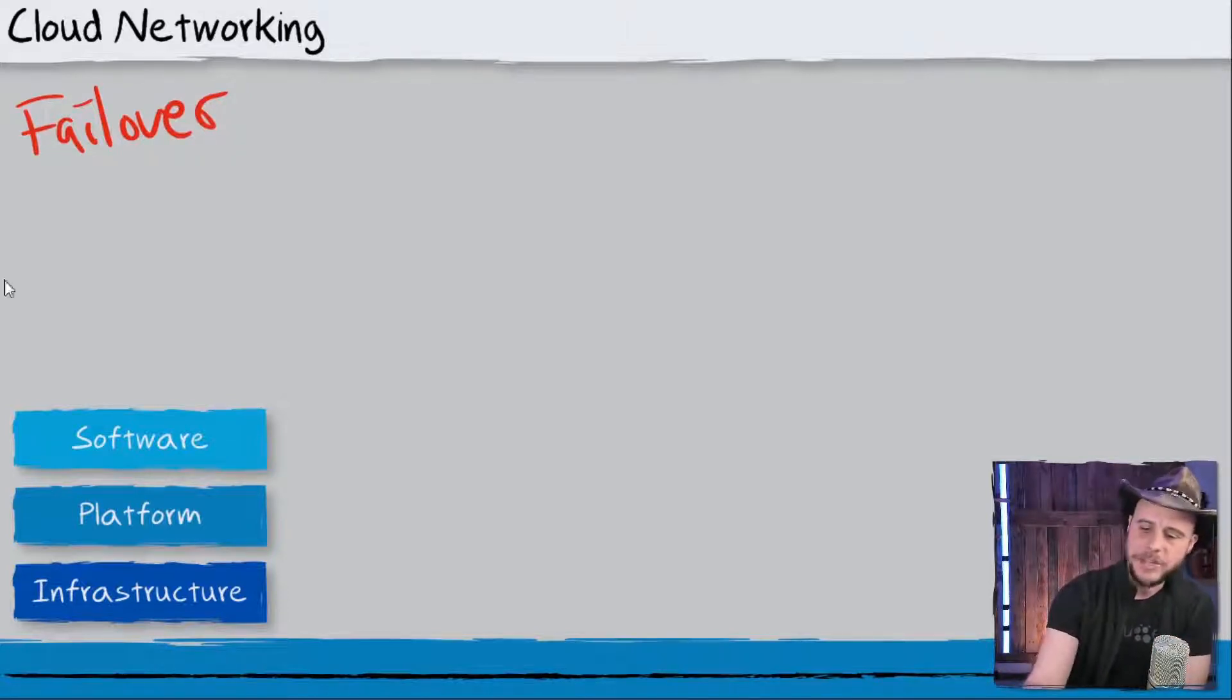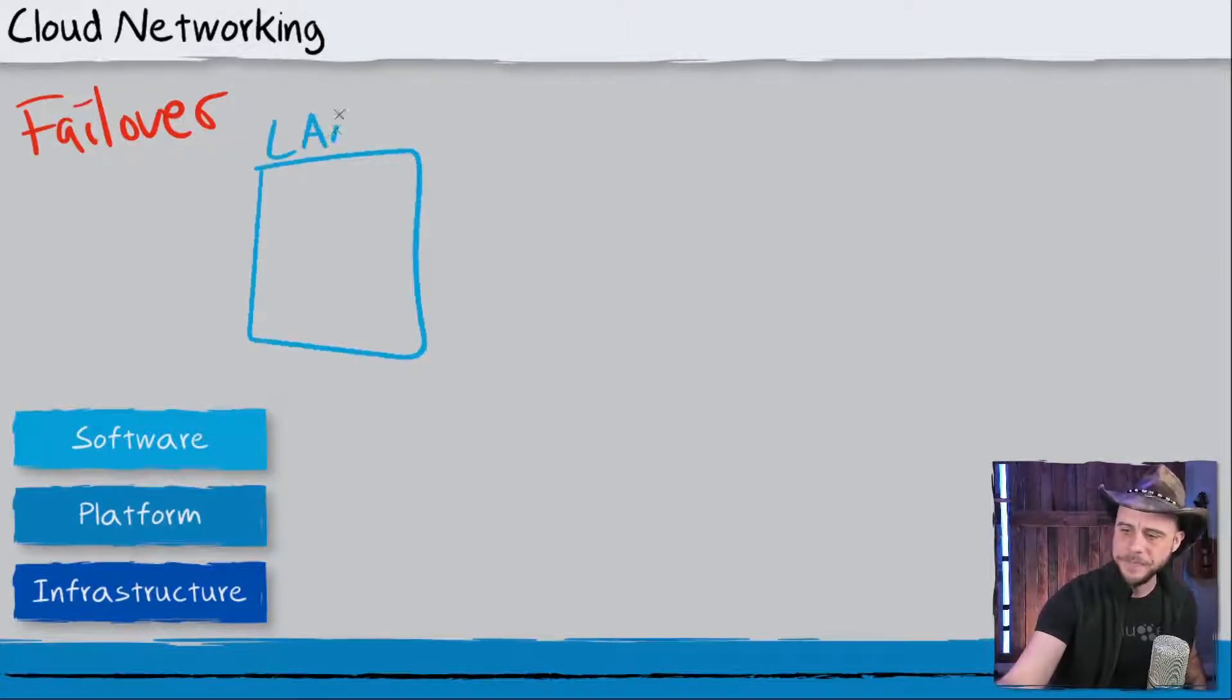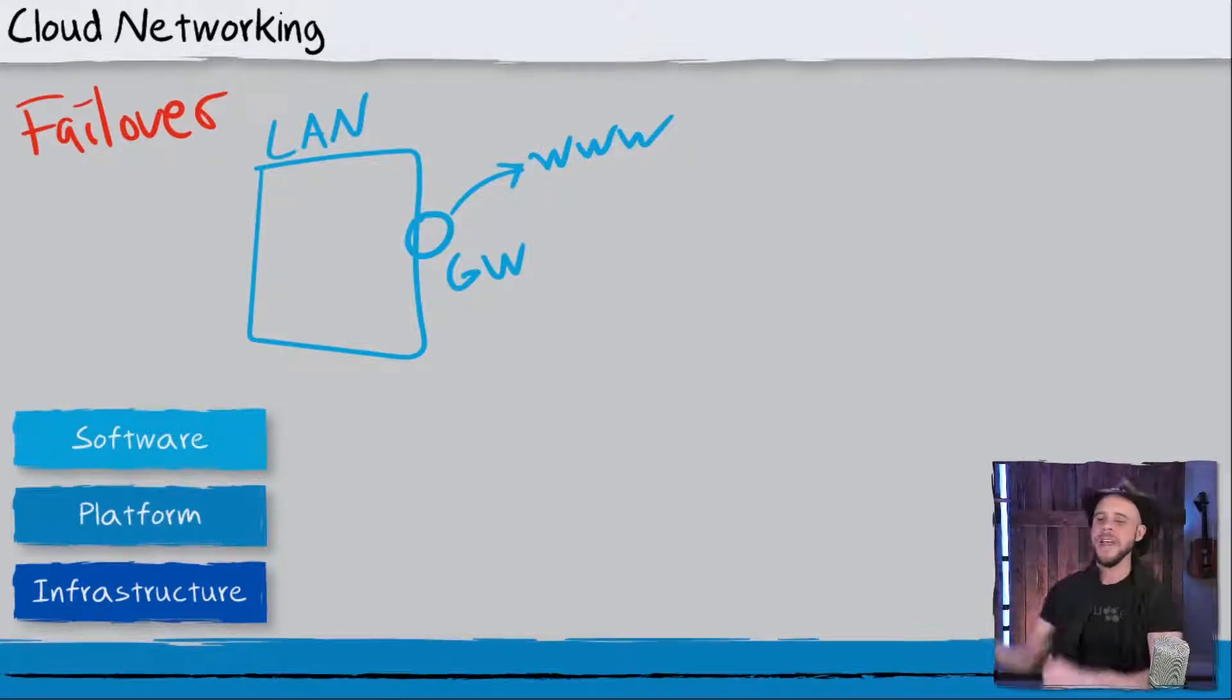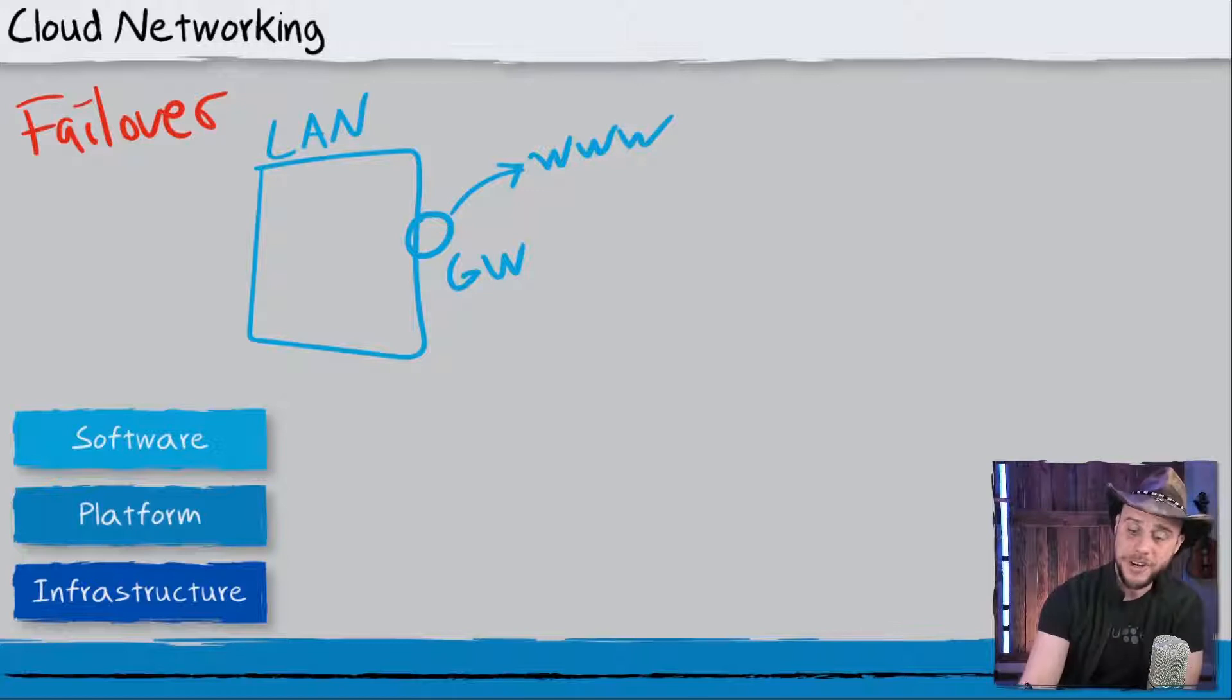Now, in some of the diagrams that you might have seen me drawing earlier on, like when I was drawing my local area network here, you heard me mention the idea of a gateway, and that gateway might lead us to the internet. That's a happy little path. The problem is though, that might be a single piece of infrastructure in your environment.